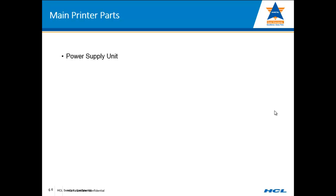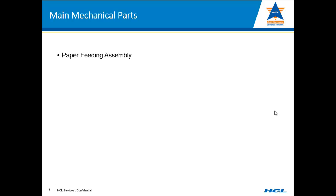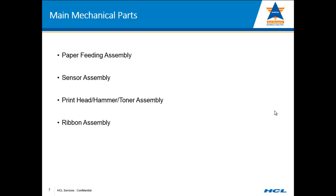The main parts of a printer are: first, the power supply unit, which gives power to the printer. Second is the logic card, which is the brain of the printer — it decides which part has to function at what time and how. There are also many mechanical assemblies: mechanisms for sensors, paper feeding, printing, and ribbon movement. The main mechanical parts include paper feeding mechanisms, sensor mechanisms, print head or toner mechanisms, and a ribbon mechanism.